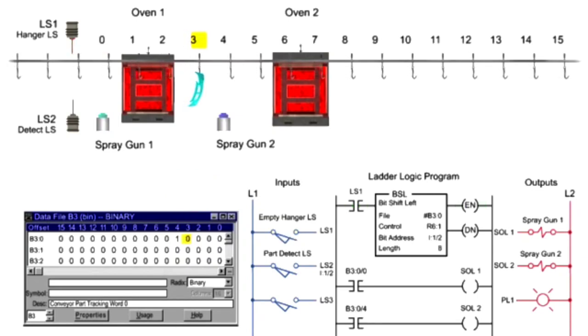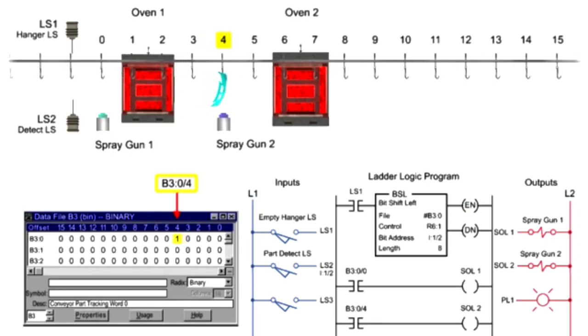Shifting to the fourth bit of the word, bit 4 input status is True and the Topcoat Spraygun Solenoid is energized, completing the paint process.